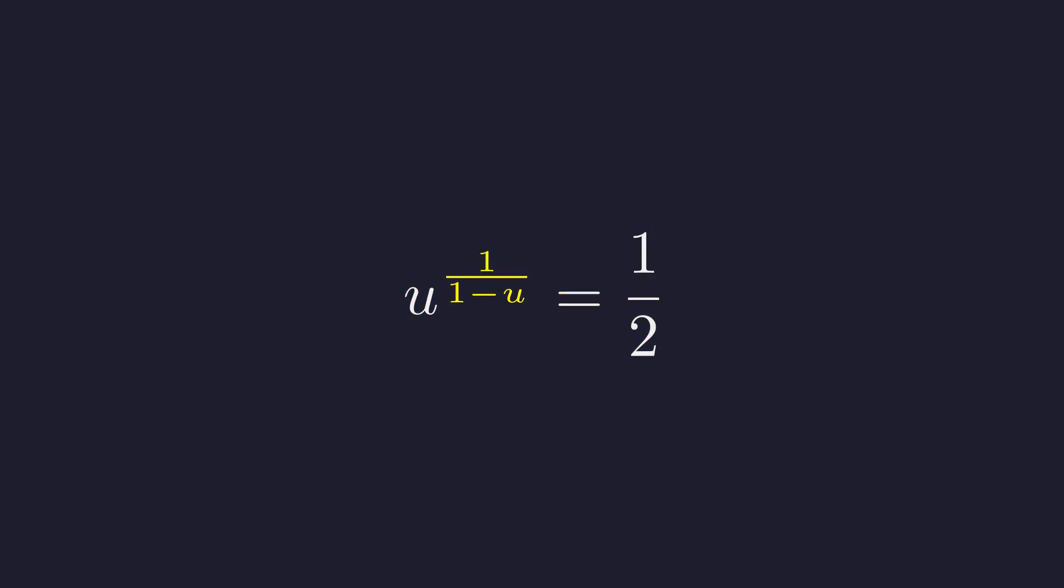To clear the fraction in the exponent, we raise both sides to the power of 1 minus u. This isolates u on the left side. Expressing the base as a power of 2 allows us to match the terms. This simplifies to u equals 2 to the power of u minus 1. We apply exponent rules to separate the power. This is equivalent to 2 to the power of u divided by 2.